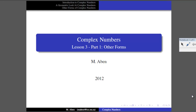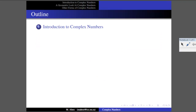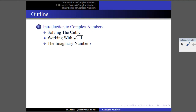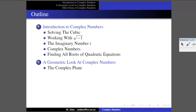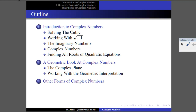Welcome to part four of this five-part series. We're in the first part of lesson three, with one more part after this. To recap: we started by introducing complex numbers from a historical perspective, looking at efforts to solve the cubic and how the square root of negative one helped. We formally defined the imaginary number i, used it to introduce complex numbers, found all roots of quadratic equations including complex ones, then took a geometric look at complex numbers and defined the complex plane. Now we're going to look at other forms of representing a complex number.